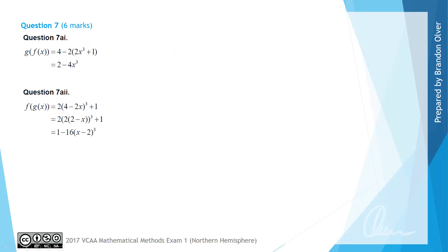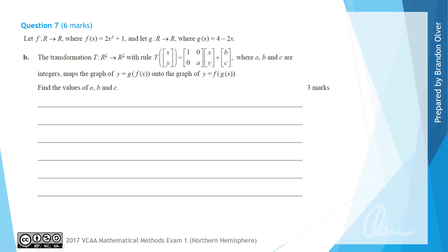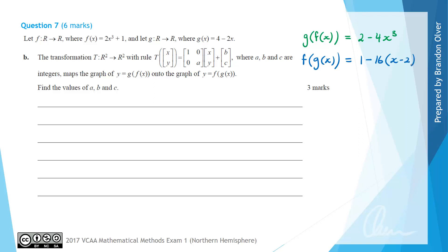That is the answer to part A(ii), giving us both results required by the examination. Next we have the transformation T expressed in matrix form with integer entries a, b and c. We are told this transformation maps the graph of y = g(f(x)) onto the graph of y = f(g(x)). To start, we rewrite our rules: g(f(x)) = 2 - 4x³ and f(g(x)) = 1 - 16(x - 2)³.